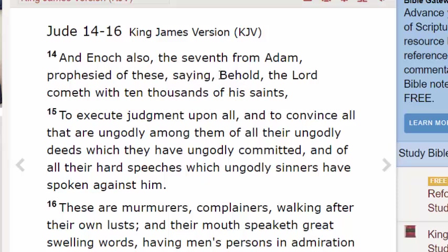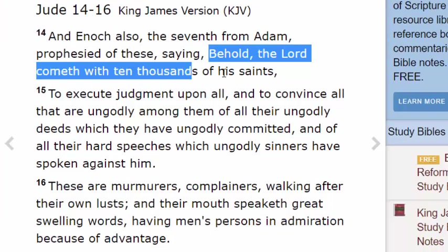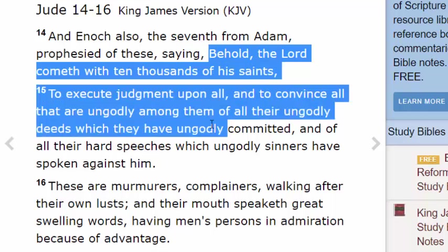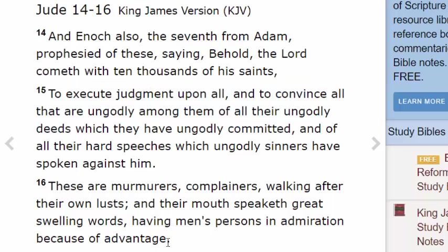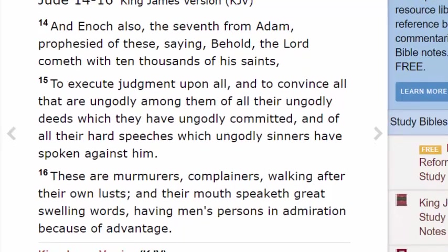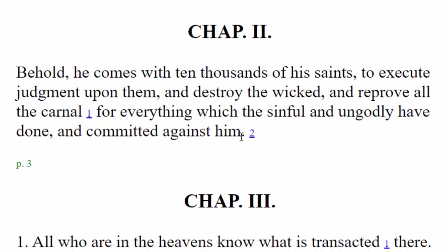In verse 14 it says, 'Behold, the Lord cometh with ten thousand of his saints to execute judgment upon all, and to convince all that are ungodly among them of all their ungodly deeds which they have ungodly committed' — that's actually talking about the Day of the Lord we read about in Revelation chapter 6. That was the Book of Jude, found in the New Testament, but when you come to the Book of Enoch you see that is a quotation of the entire chapter 2. Those that read the Father's scripture in its entirety have no problem recognizing the legitimacy of the Book of Enoch.